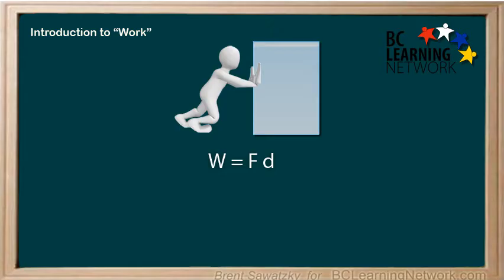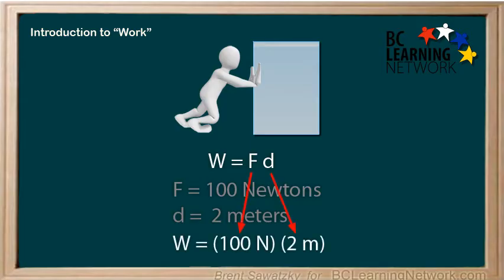So we write W equals FD, and in our case F equals the force you applied, which is 100 Newtons. D is the distance the object moved in that same direction, which in this case would be 2 meters. We double-check that the distance we're talking about is in the same direction as the force. Yep, both going to the right. So let's rewrite the equation with our numbers in brackets like this and then calculate. The work you did on this object is 200 Joules.